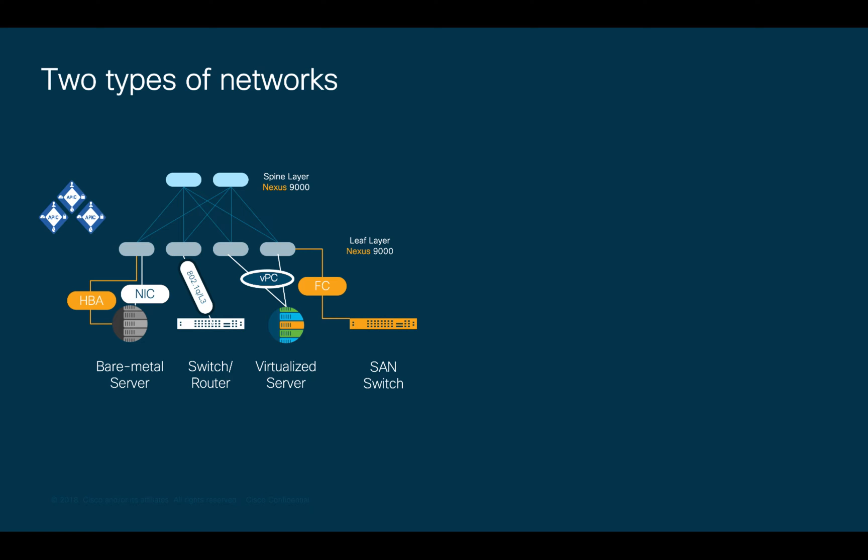That connection to the ACI fabric may be a single NIC or dual NIC using VPC, for example, connecting to two different leaves. The only exception for VXLAN encap and de-cap would be fiber channel and FCOE connections. But we will cover this in another chapter within this module.